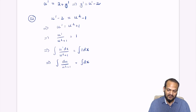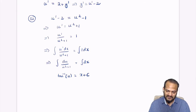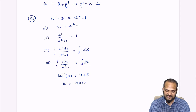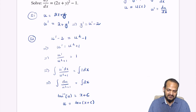Integrating both sides, I get tan inverse of u on the left-hand side and x plus c on the right-hand side. Taking tan of both sides gives u is equal to tan of x plus c.